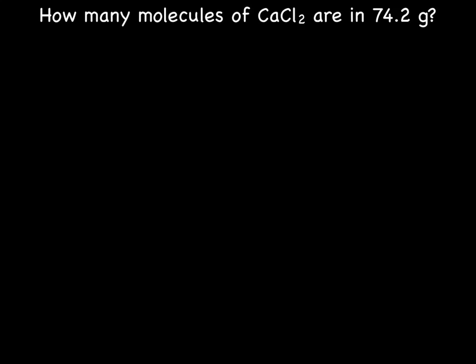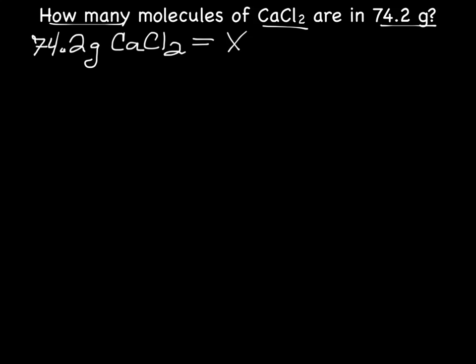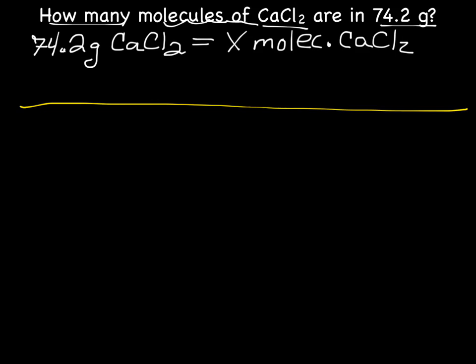The first step is to write our math problem. Our known is 74.2 grams of calcium chloride, and our unknown X is the number of molecules of calcium chloride. So X molecules of calcium chloride is what we're solving for. Next, we'll set up our grid and plug in our known over 1: 74.2 grams CaCl₂ over 1.